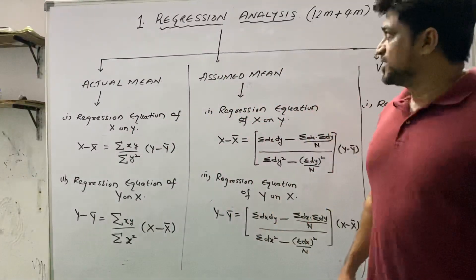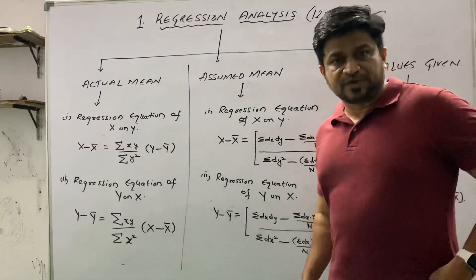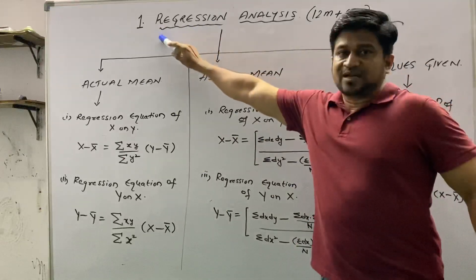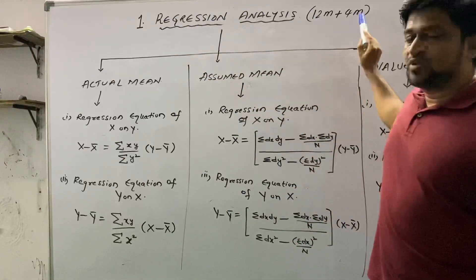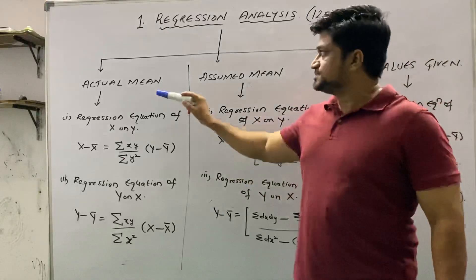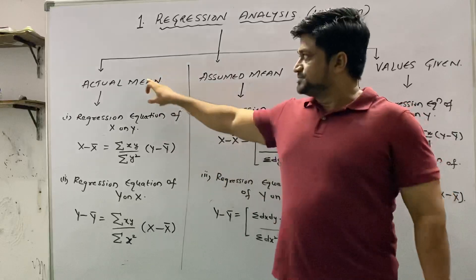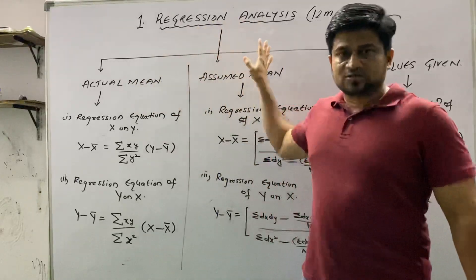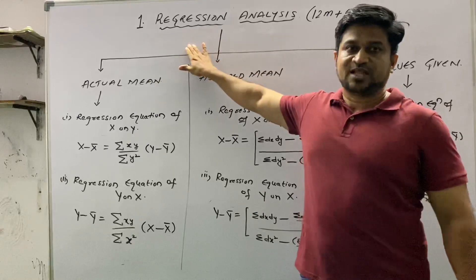For revision of unit 1, what you need to remember is that unit 1 contains one dual marks question and one four-mark question as per the syllabus, so total 5 marks are there. Because we have already done all those things earlier, we are starting the revision of regression analysis.